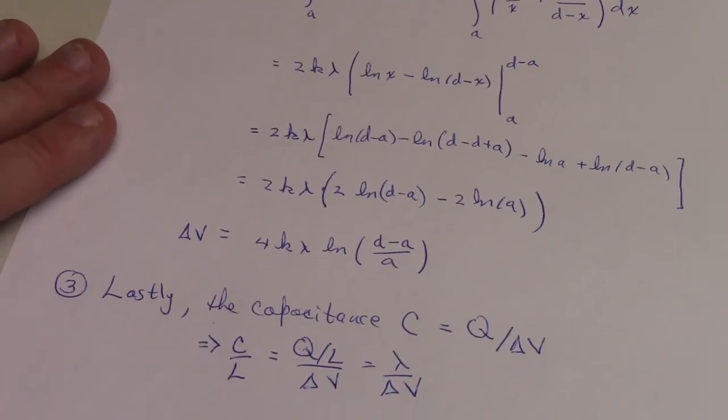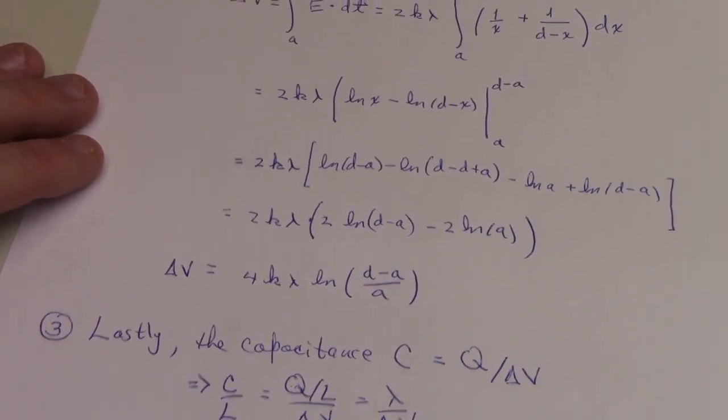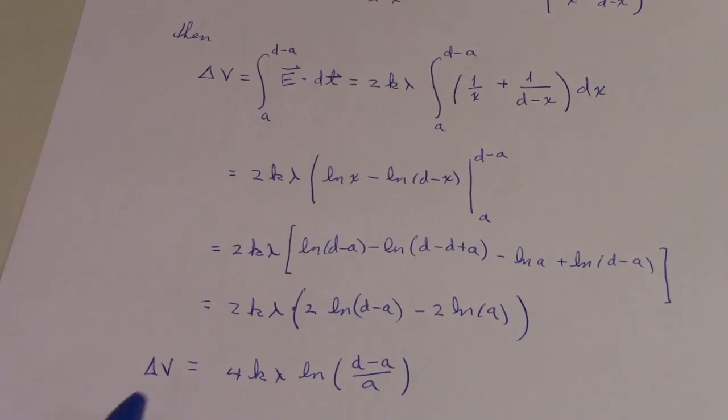I won't bore you with the details, but that then becomes delta v, the difference in potential between those two wires, is actually 4k lambda times the natural log of d minus a over a. So that's step two.